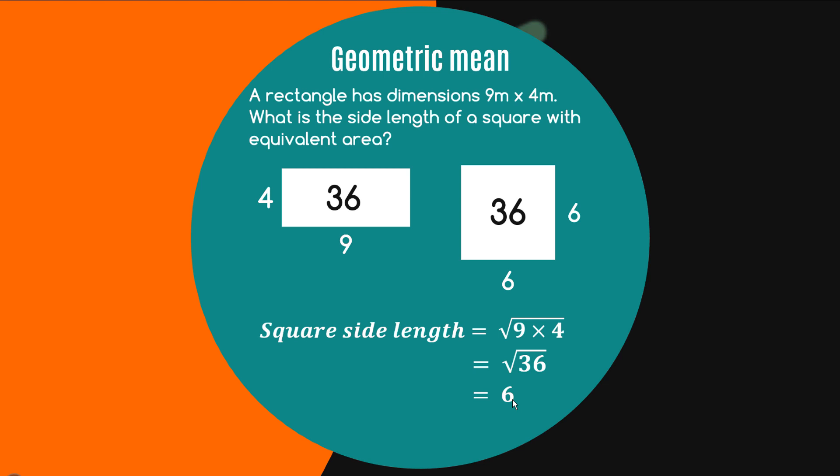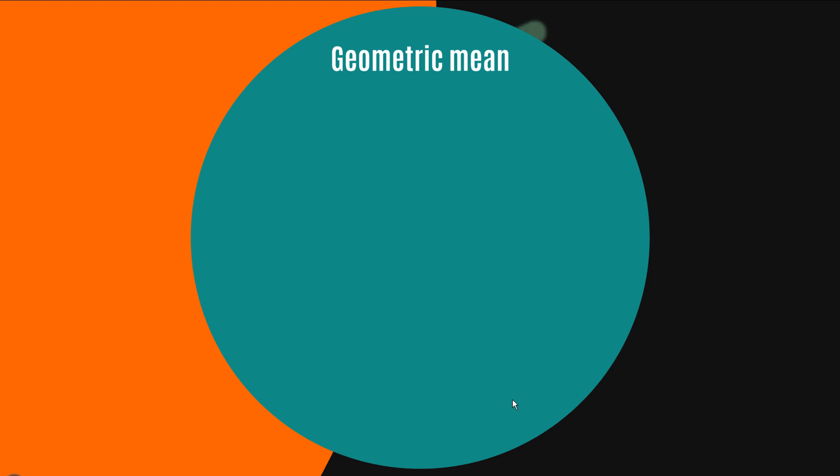So that's where the geometric mean gets its name but the applications extend well beyond geometry. My Tesla stocks gain 10 percent in year one, my theoretical Tesla stocks that is, 20 percent in year two and 30 percent in year three. What's the average yearly rate of return? Now this is a classic example of where geometric means come into the picture when you're dealing with rates of return.